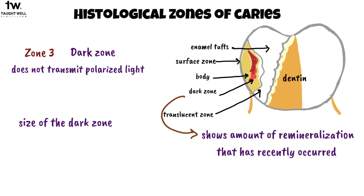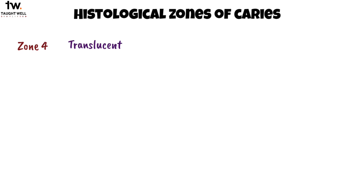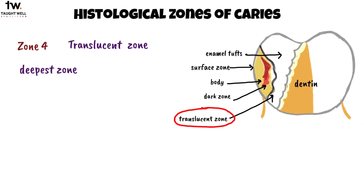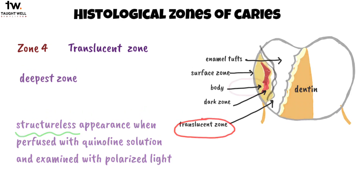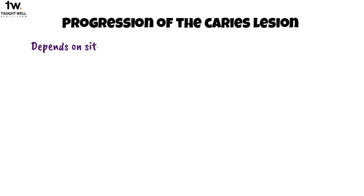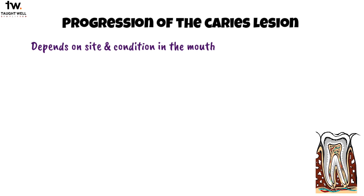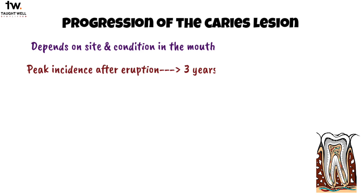Zone 4 is the translucent zone — the deepest zone, representing the advancing front of the enamel lesion. It has been called translucent because of its structureless appearance when perfused with quinoline solution and examined with polarized light. The progression and morphology of the caries lesion depend on the site of origin and the conditions in the mouth. Three years after eruption of the tooth is the time of peak incidence of new lesions.